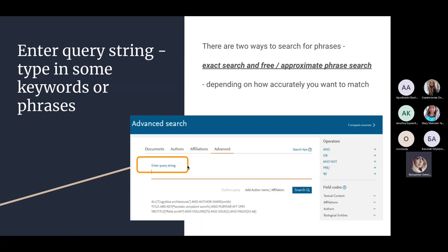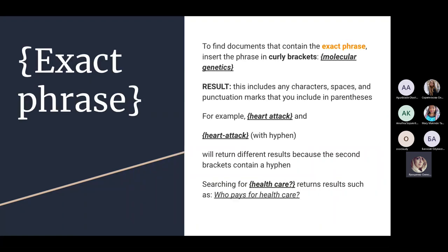What does 'query string' mean? Sometimes students ask what it means when Scopus asks for a query string — it is just the name of the field. It means type in some keywords or phrases. There are two ways to search for phrases in Scopus. We do not need quotation marks to search for one word, but we need specific symbols to search for phrases — either exact search using curly brackets or approximate phrase search using quotation marks.